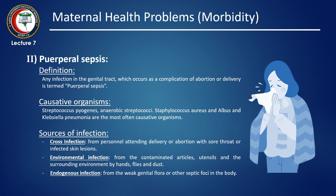Puerperal sepsis is a very important subject. It means any infection in the genital tract which occurs as a complication of abortion or delivery. The causative organisms include Streptococcus pyogenes, other streptococci, Staphylococcus aureus and albus, and Klebsiella pneumoniae.